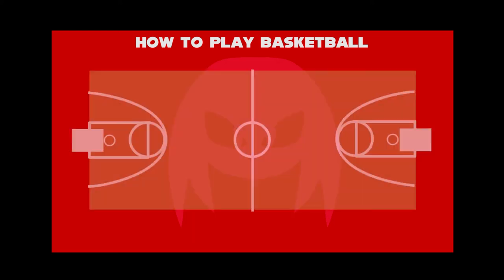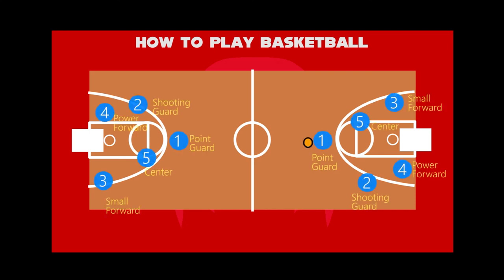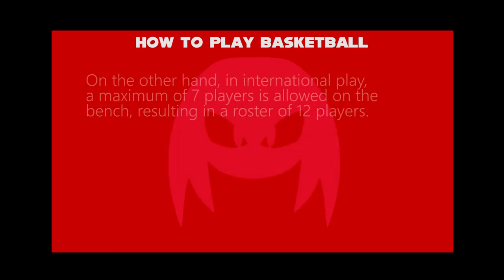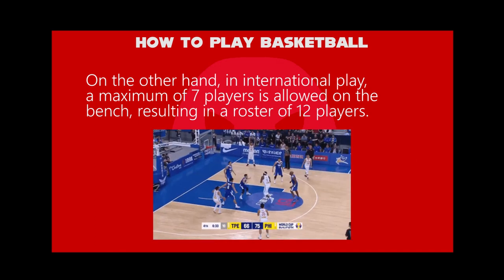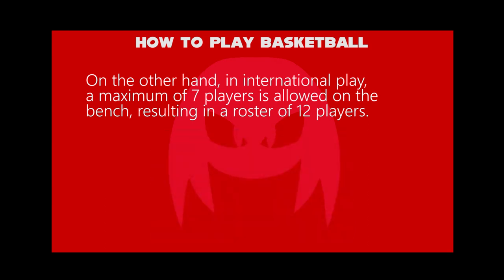Back in the schematic diagram, we allow a total of five players from each team on the court at one time. They include point guard, shooting guard, small forward, power forward, and center, ordered from number one to five. In international play, a maximum of seven players is allowed on the bench, resulting in a roster of 12 players. That's how the game works.